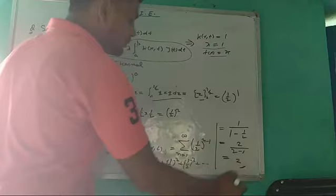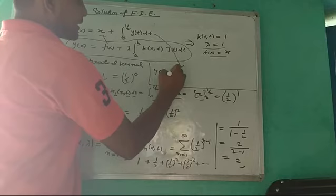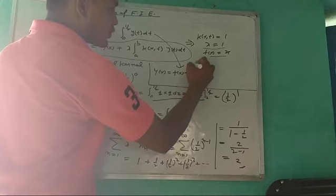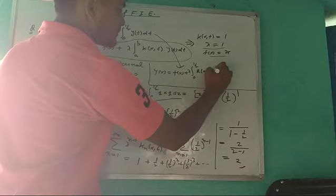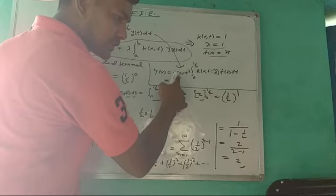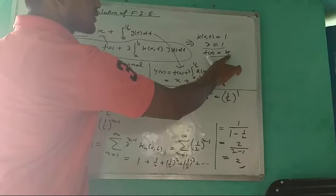The solution using the resolvent kernel is: y(x) = f(x) + λ · integral from 0 to 1/2 of R(x,t,λ) · f(t) dt. Substituting the values: f(x) = x, λ = 1, and the resolvent kernel R = 2. Since f(x) = x, we replace x by t to get f(t) = t. So y(x) = x + integral from 0 to 1/2 of 2·t dt.